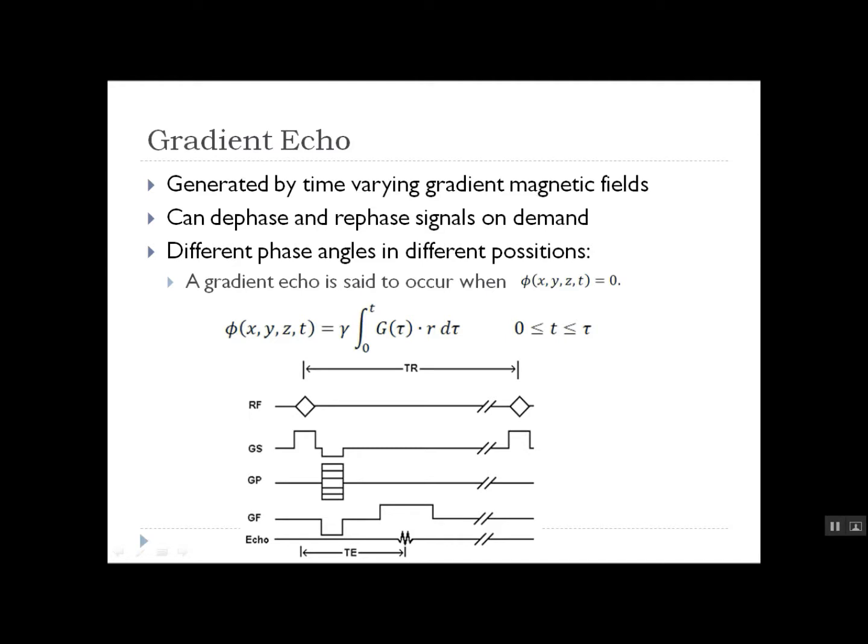A gradient echo is simply a manipulation of the free induction decay signal that begins by applying an external dephasing gradient field. This gradient causes a change in local magnetic fields and alters the resonance frequency slightly across the specimen, resulting in accelerated dephasing. The process is then reversed by applying a rephasing gradient with the same strength but opposite polarity to the dephasing gradient, reversing the phase scramble. As a result, a small gradient echo is generated.